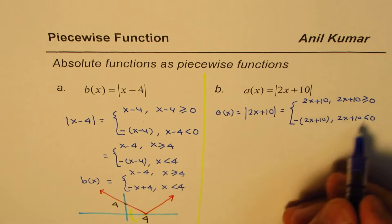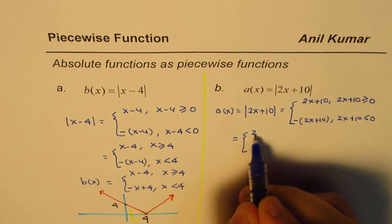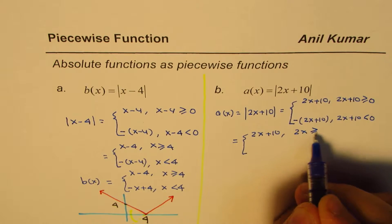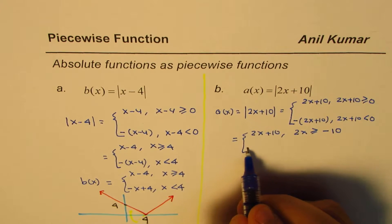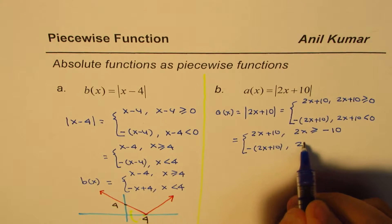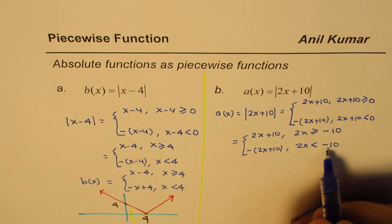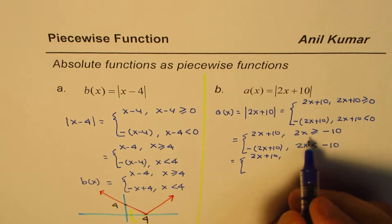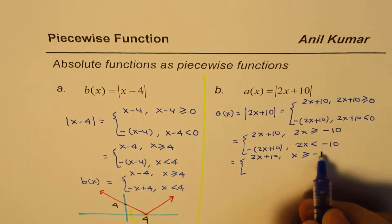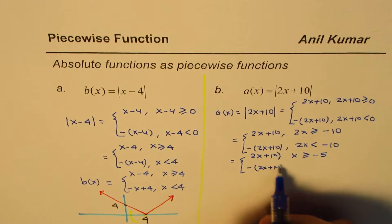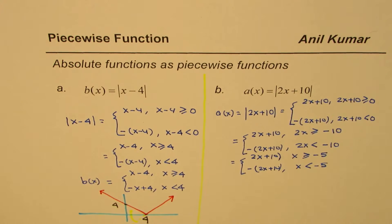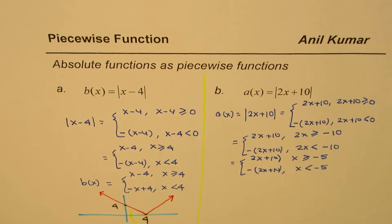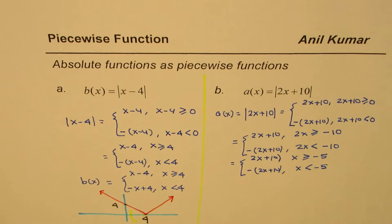Solving the inequality in stages: 2x + 10 ≥ 0 gives 2x ≥ −10, so x ≥ −5. For the negative piece, 2x + 10 < 0 gives x < −5. Note: when taking 10 to the right side it becomes minus — that was the mistake I made in my earlier video. So the piecewise function is 2x + 10 for x ≥ −5, and negative of (2x + 10) for x < −5.